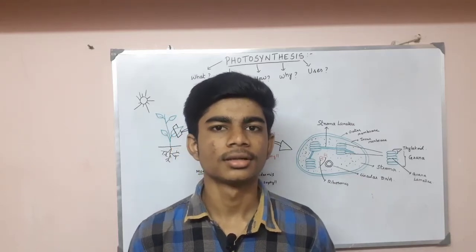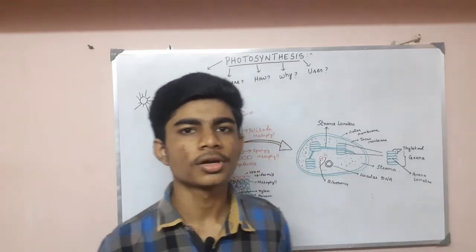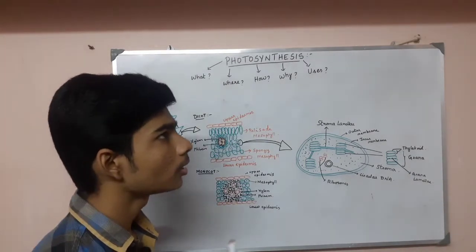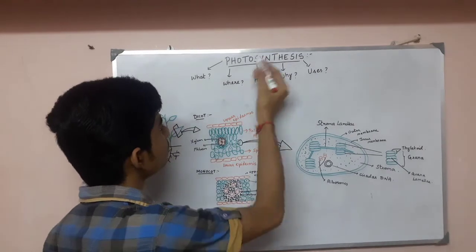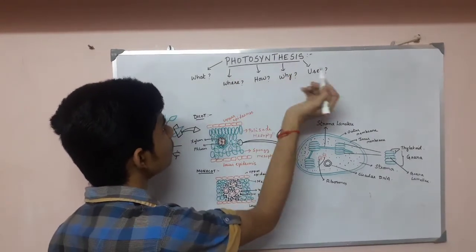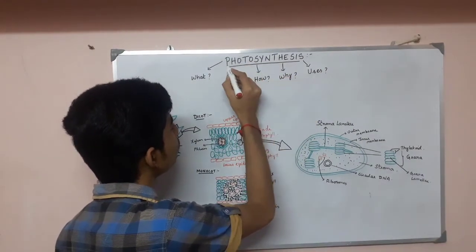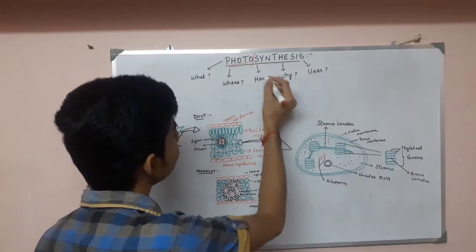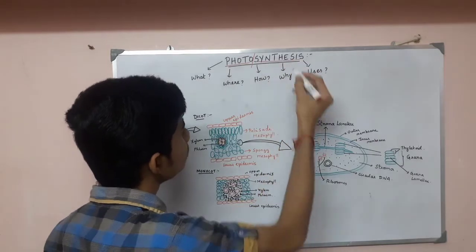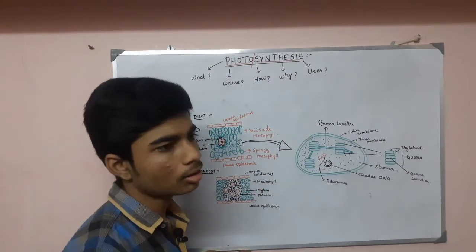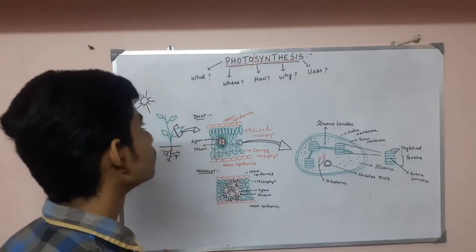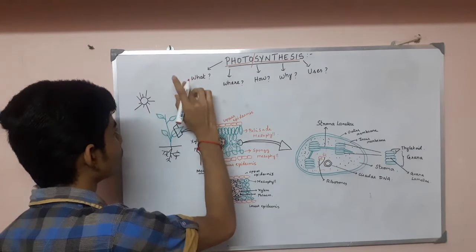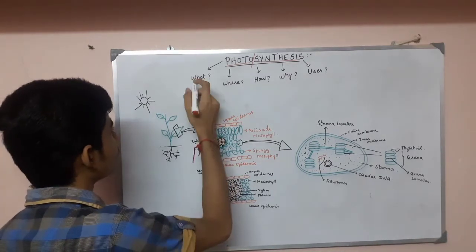Hi everyone, welcome to my channel. Today we are going to see about the more interesting topic — it is photosynthesis. What is photosynthesis? In this name itself there is a meaning. We can break this name into two parts: photo means light, and synthesis means synthesis of organic compounds, that is carbohydrate or glucose. So photo means light — what does photosynthesis mean? Preparation of food.